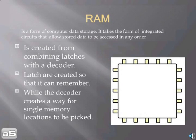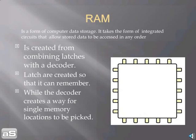RAM is a form of computer data storage. It takes the form of integrated circuits that allow stored data to be accessed in any order. RAM is created from combining latches with a decoder. Latches are created so that it can remember, while the decoder is created for single memory locations to be picked.